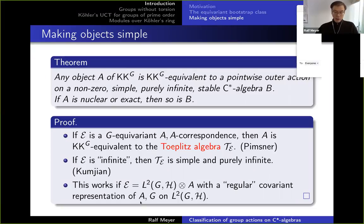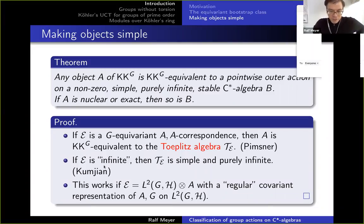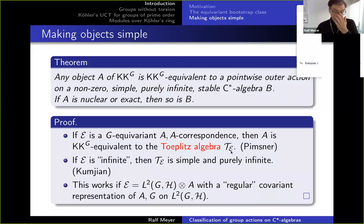The same proof shows the stronger equivariant statement. There are also results where this Pimsner algebra is purely infinite and simple — roughly speaking, if the correspondence E is infinite enough then the Pimsner algebra TE has these properties; that's a paper by Kumjian. I construct a regular covariant representation of the G-action on A, represent A on a Hilbert space, add on L²(G), do the usual thing to make the reduced crossed product, and then tensor with A letting A act on the left.